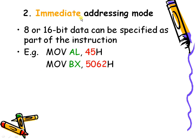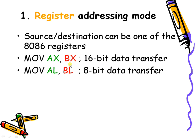In immediate addressing mode, the operand is directly given in the instruction itself — for example, MOV AL, 45H. Here, 45H is the operand directly included in the instruction, which is why this kind of data is called immediate data and this addressing mode is called immediate addressing mode. The processor accesses the information directly from the instruction itself.